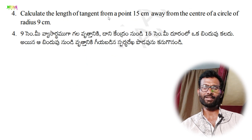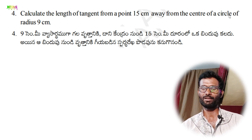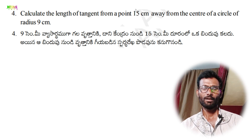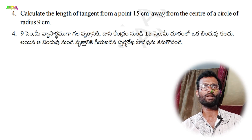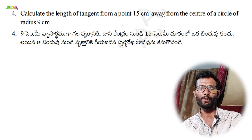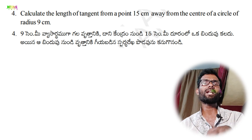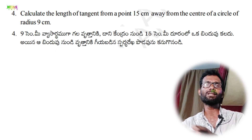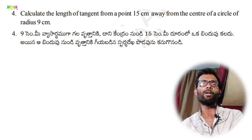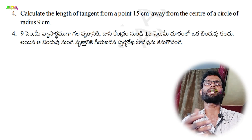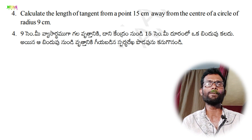Question number 4: calculate the length of the tangent from a point 15 centimeters away from the center of a circle of radius 9 centimeters. Here the circle has radius 9 centimeters and the exterior point is 15 centimeters from the center. This is similar to question 2.